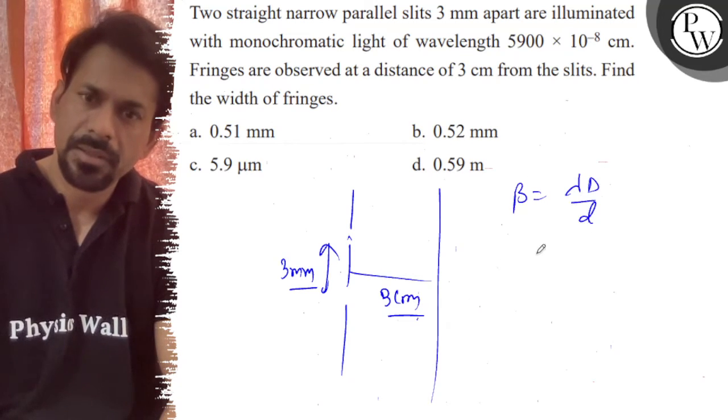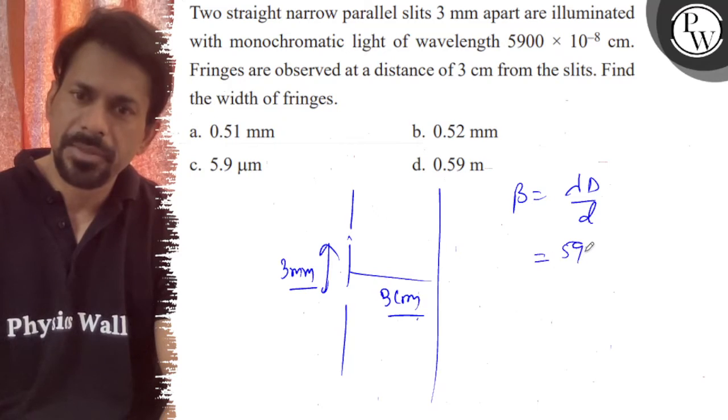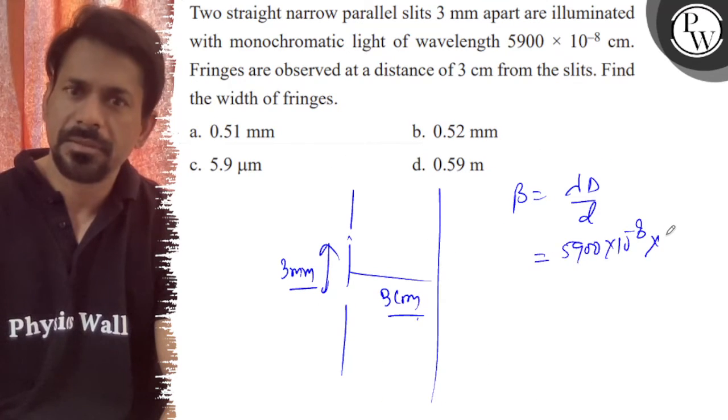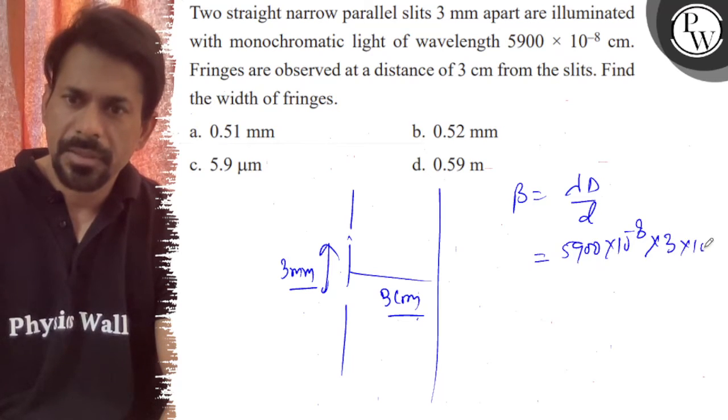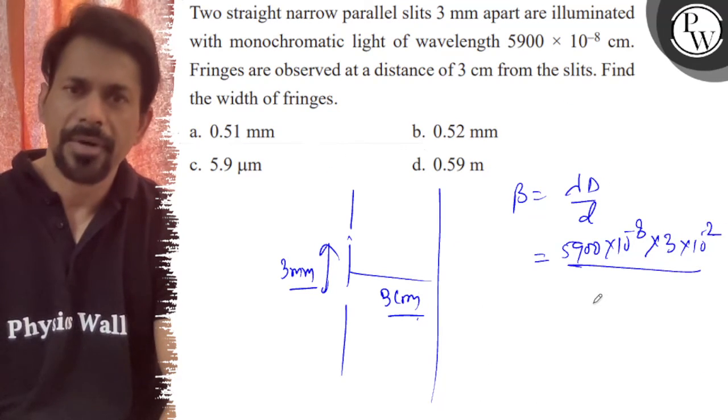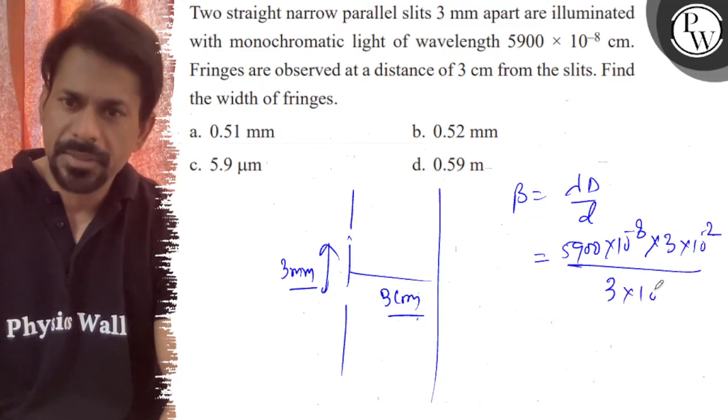λ is your 5900 × 10^-8. D is your 3 cm, 10^-2. And divided by your small d, 3 mm, 10^-3.